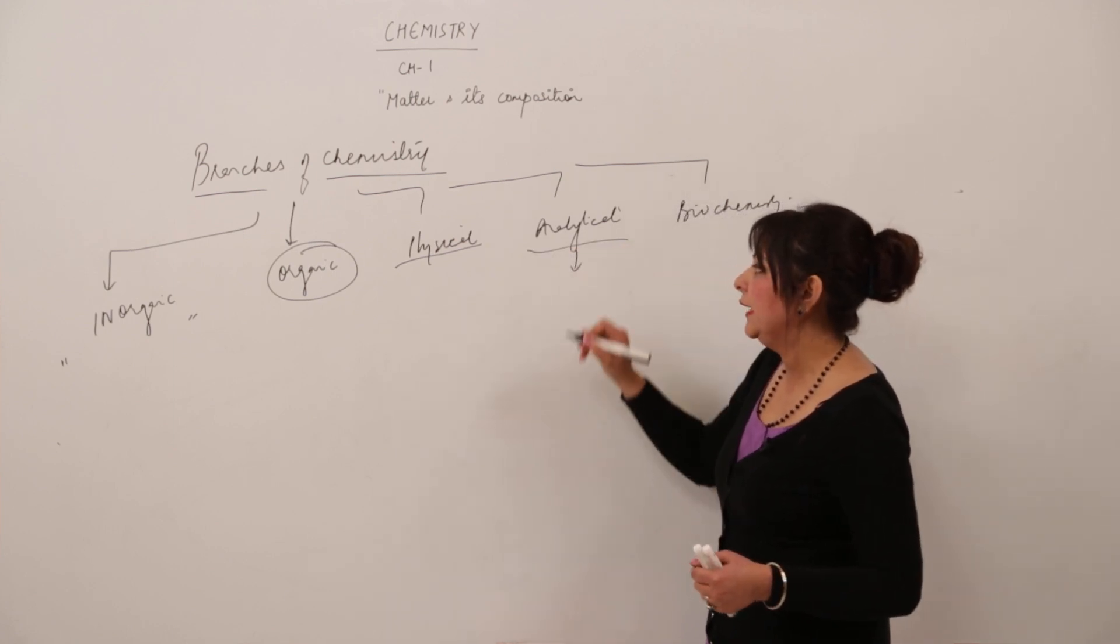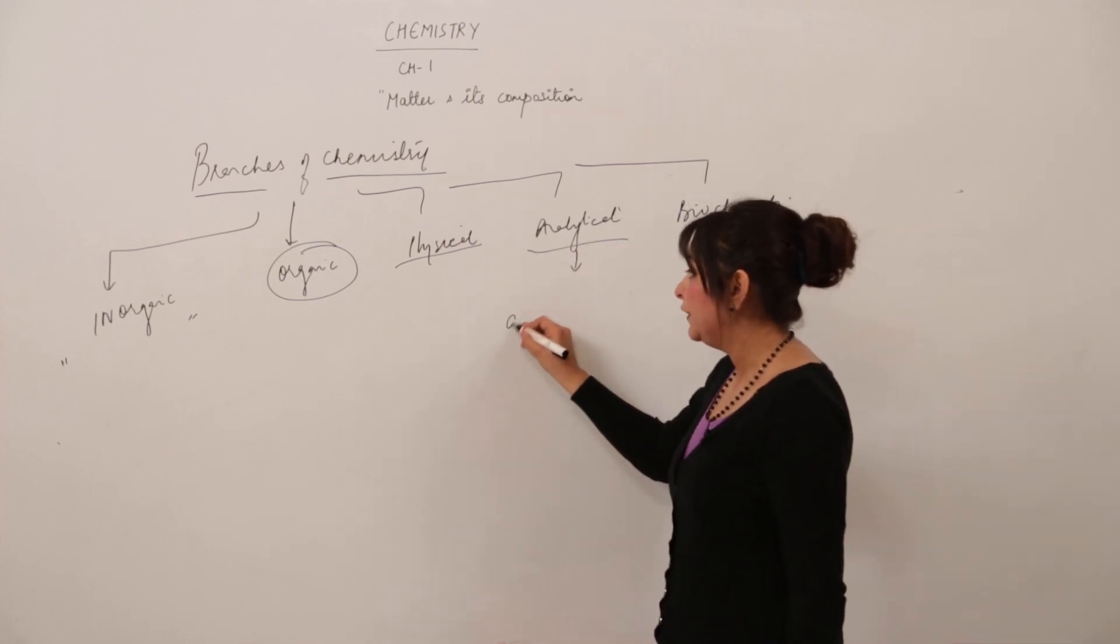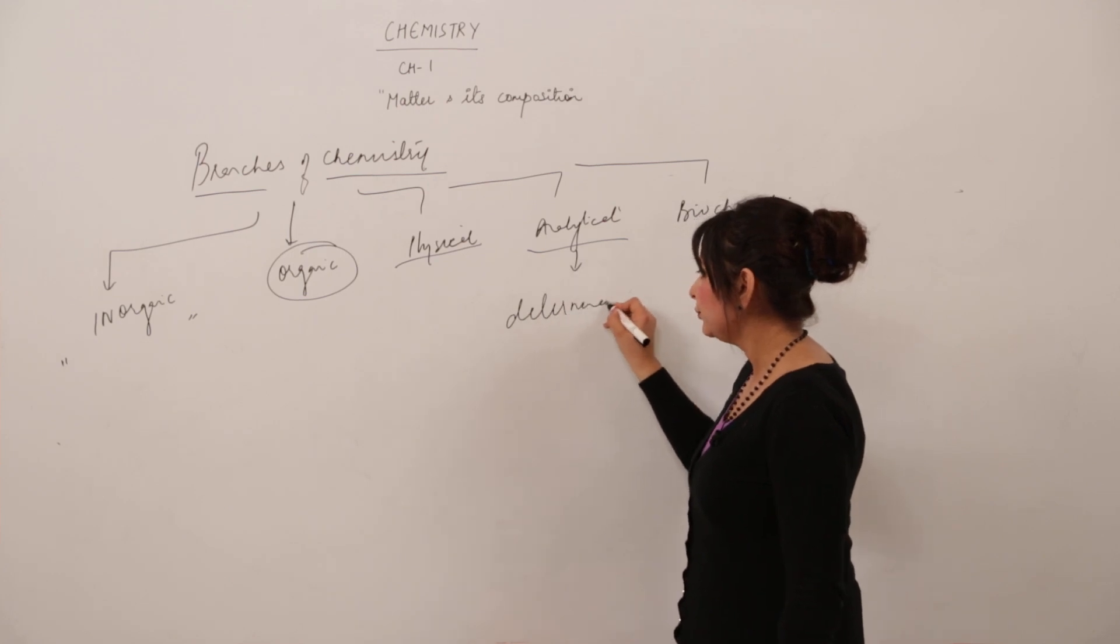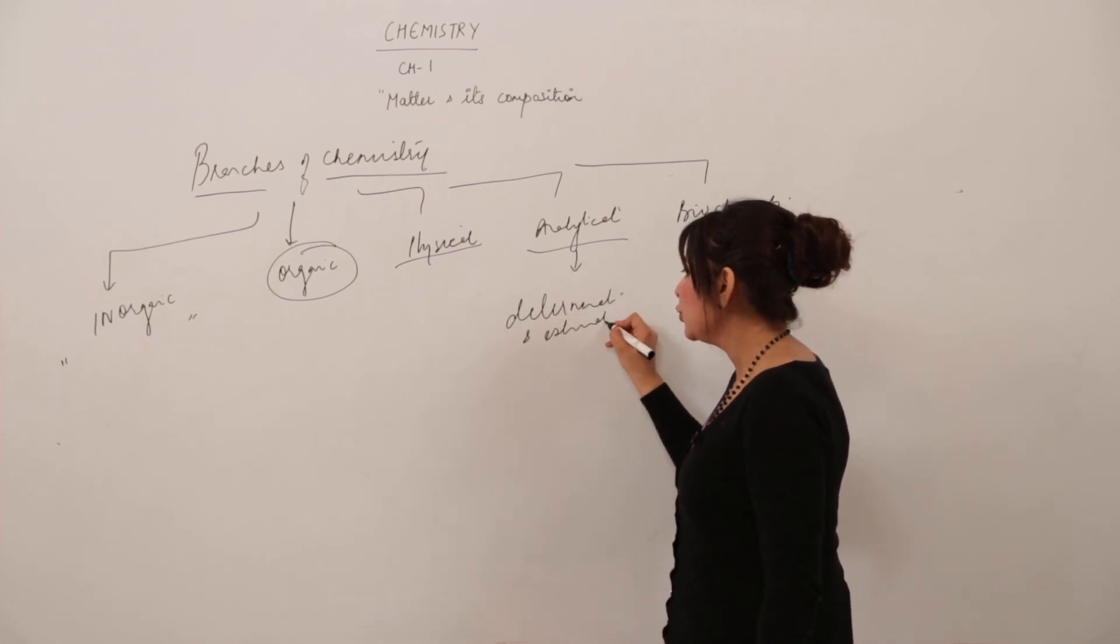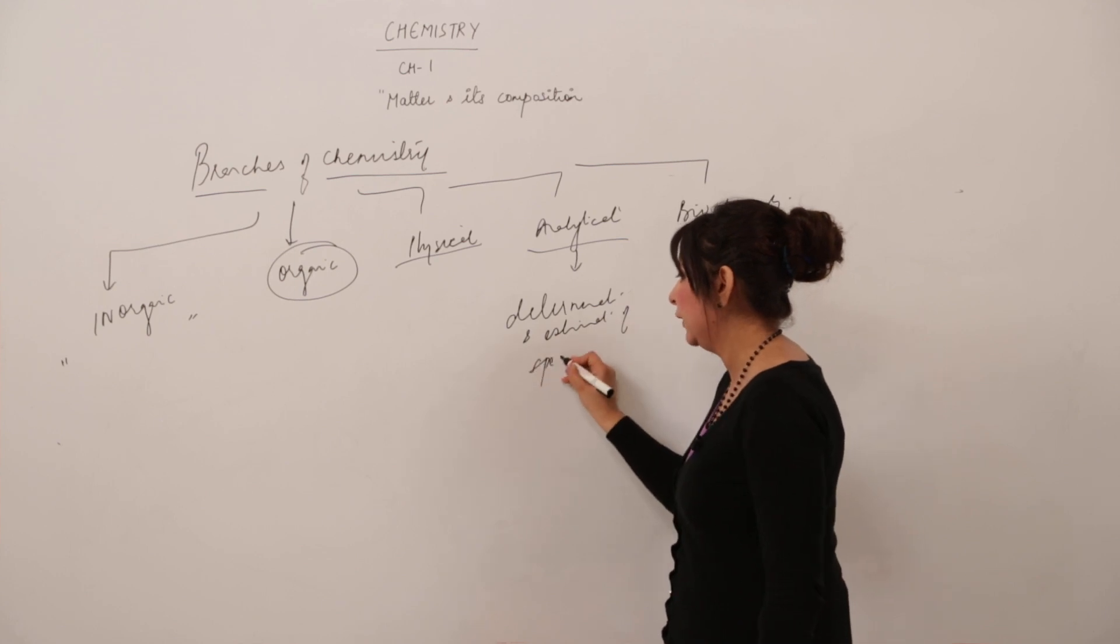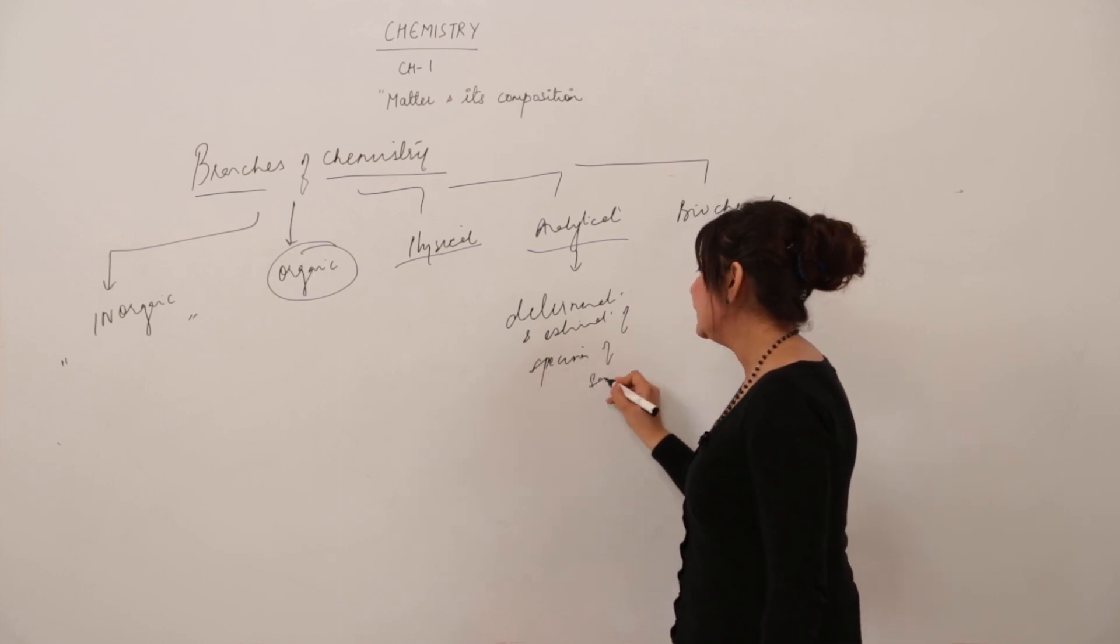Analytical chemistry deals with the determination and estimation of specimens in samples. Now, what is that? I'll give you an example.